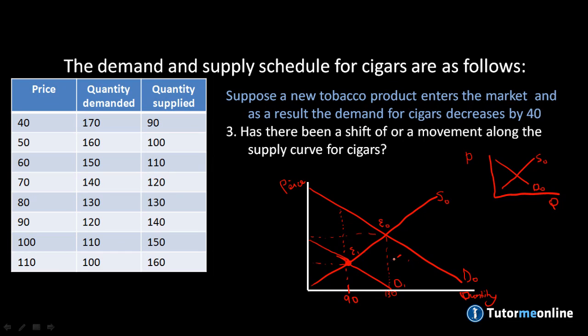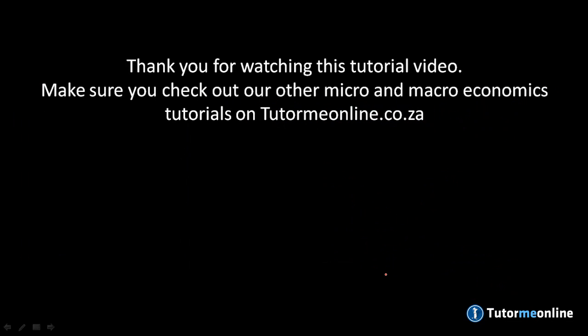We can indicate the shift using an arrow on the diagram. Thank you for watching this short tutorial video — make sure to check out our other micro and macroeconomic tutorial videos at tutomeonline.co.za.